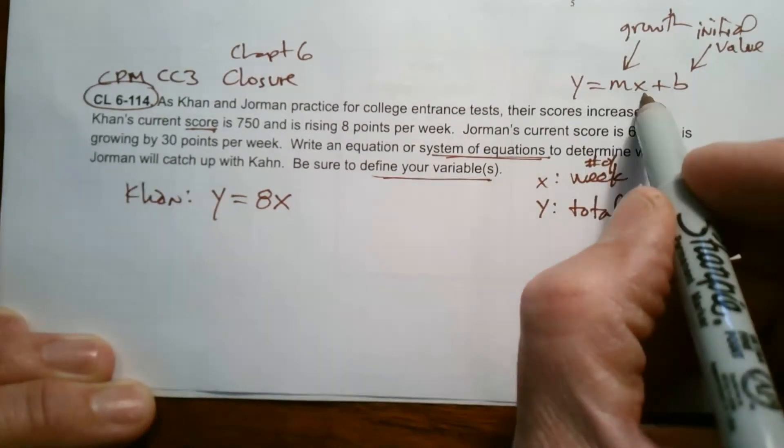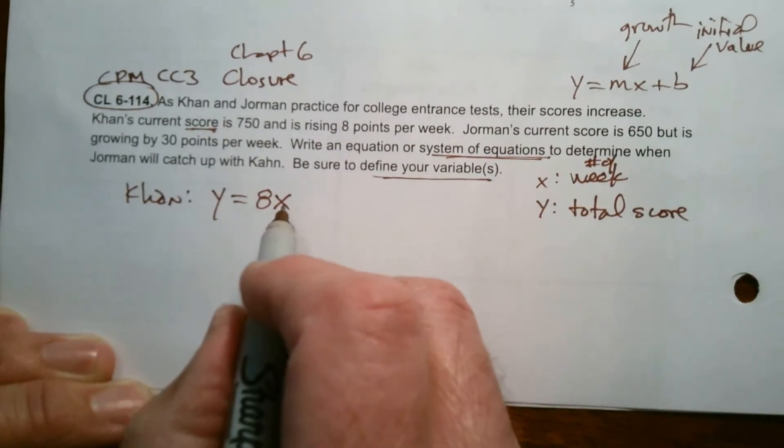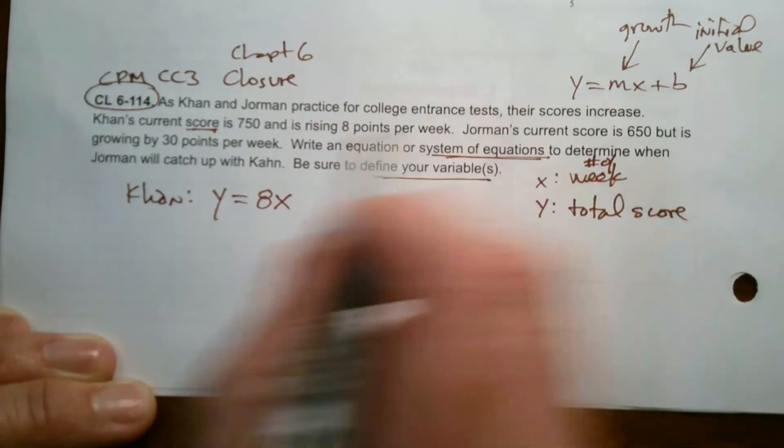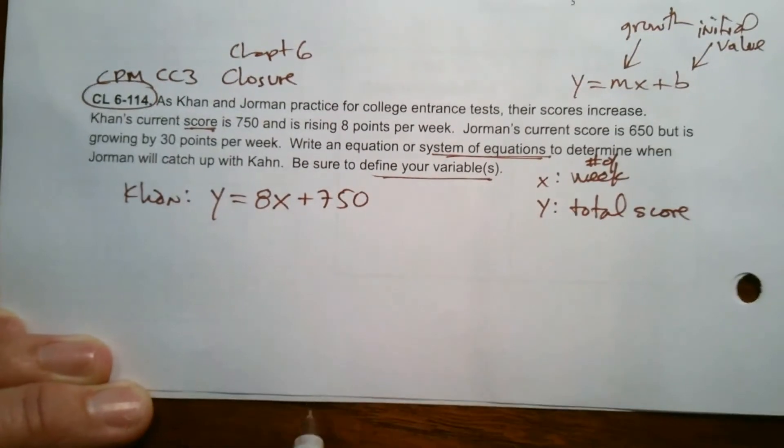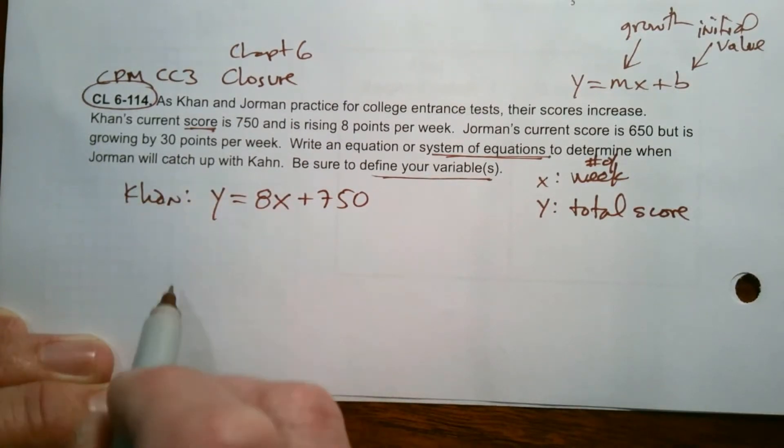8 points per week. And then B is the initial value. He started with his value of 750. So that's Khan's equation.